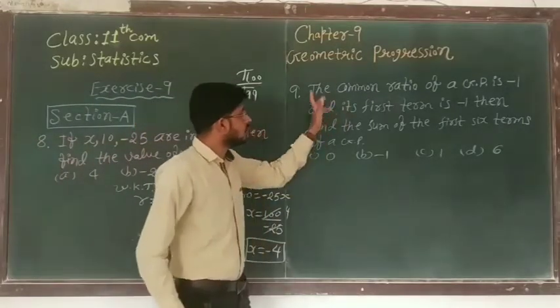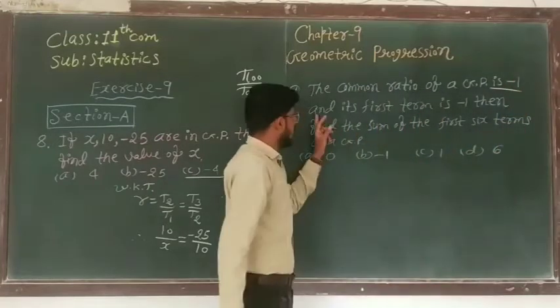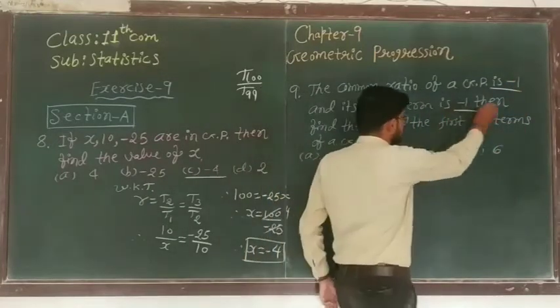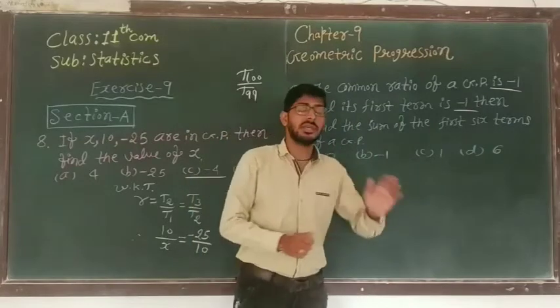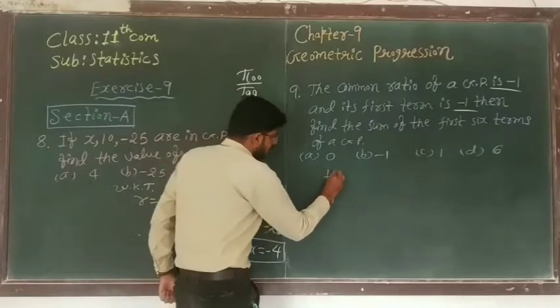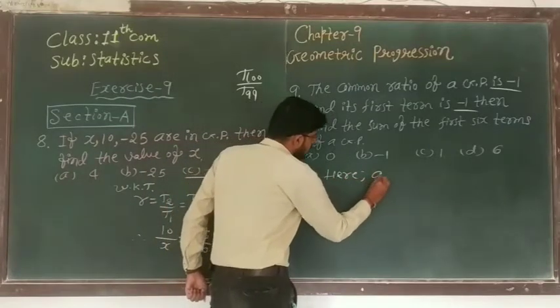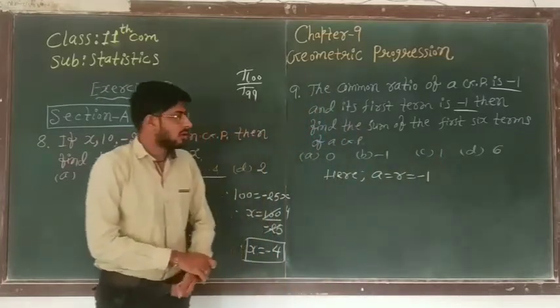Next, ninth number. The common ratio of GP is minus 1, and its first term is also minus 1. Then find the sum of the first six terms of a GP. So here first term as well as common ratio both are minus 1, and we have to find the sum of first six terms.